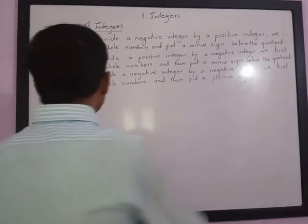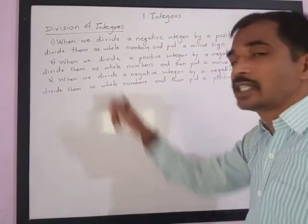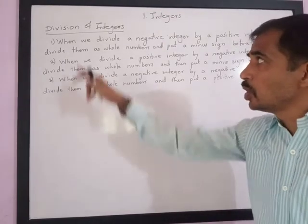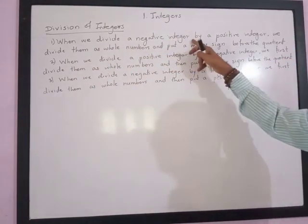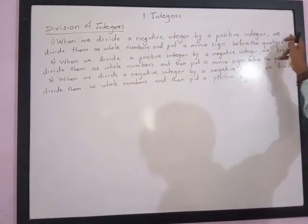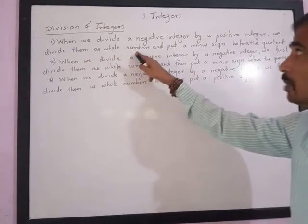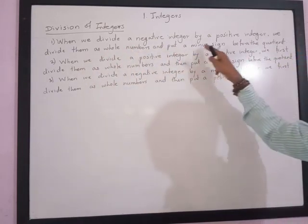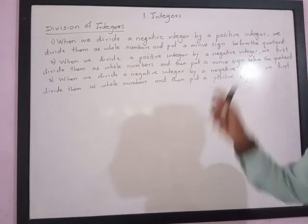In the integer chapter, the next topic is division of integers. Let us understand the rules. When we divide a negative integer by a positive integer, we divide them as whole numbers and put a minus sign before the quotient.